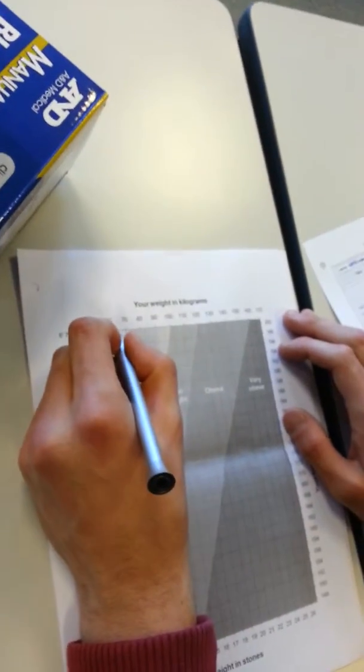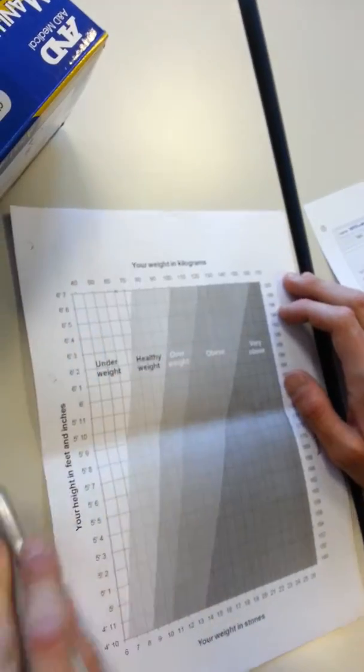We'll just mark that quickly. 65.5. Mark that there. So we know that.